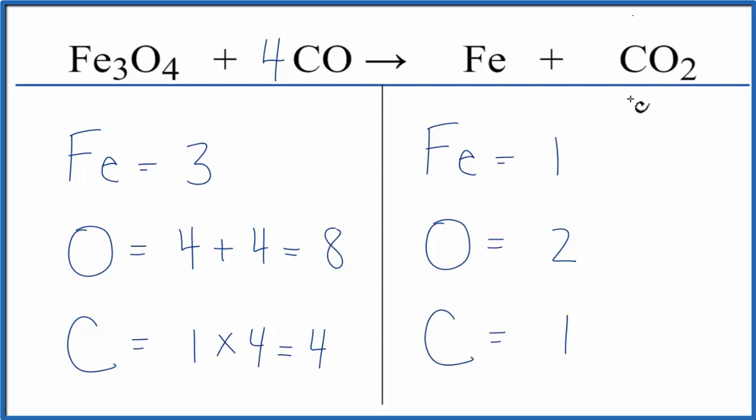If I multiply the CO₂, I need eight oxygens. And so if I put a four in front of this CO₂, two times four, that gives me eight. Those are balanced. And then one times the four. That'll give me four carbons. And the carbons are balanced.